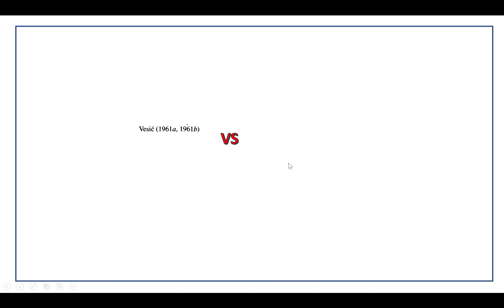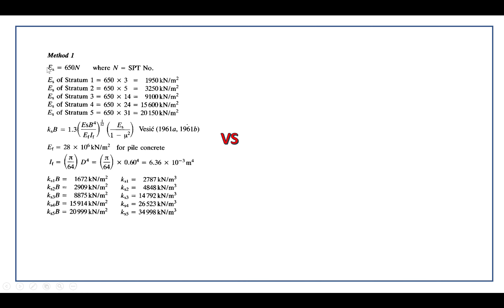Now we talk about the V6 method. Method 1: you can use this to estimate the soil modulus of elasticity. The modulus of elasticity of soil Es is equal to 650 multiplied by the average SPT N value in the layer. For layer 5, Es equals 650 multiplied by 31, which equals 20,150 kN per square meter. This is the formula proposed by V6.